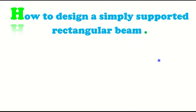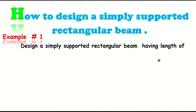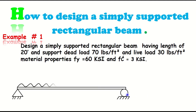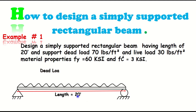How to design a simply supported rectangular beam. Example number one: design a simply supported rectangular beam having a length of 20 feet, supporting a dead load of 70 lbs per square feet and a live load of 30 lbs per square feet. The beam is simply supported with a span of 20 feet.